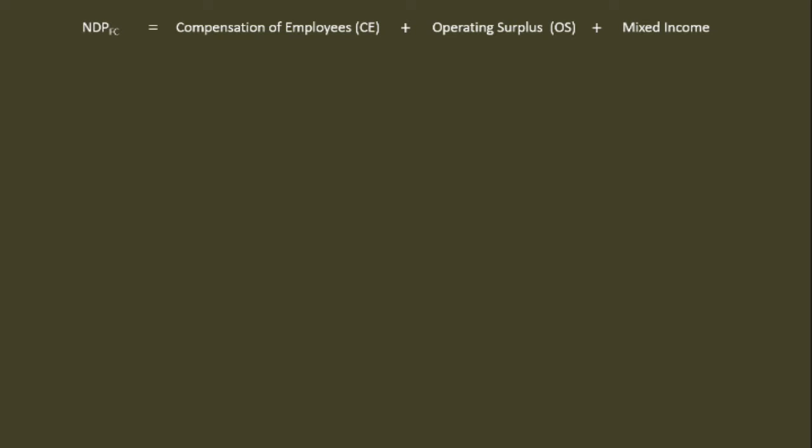The following are the steps involved in the computation of national income. The first step is estimation of net domestic product at factor cost. The second step is estimation of net national product at factor cost, i.e. national income. Net national product at factor cost is equal to net domestic product at factor cost plus net factor income from abroad.